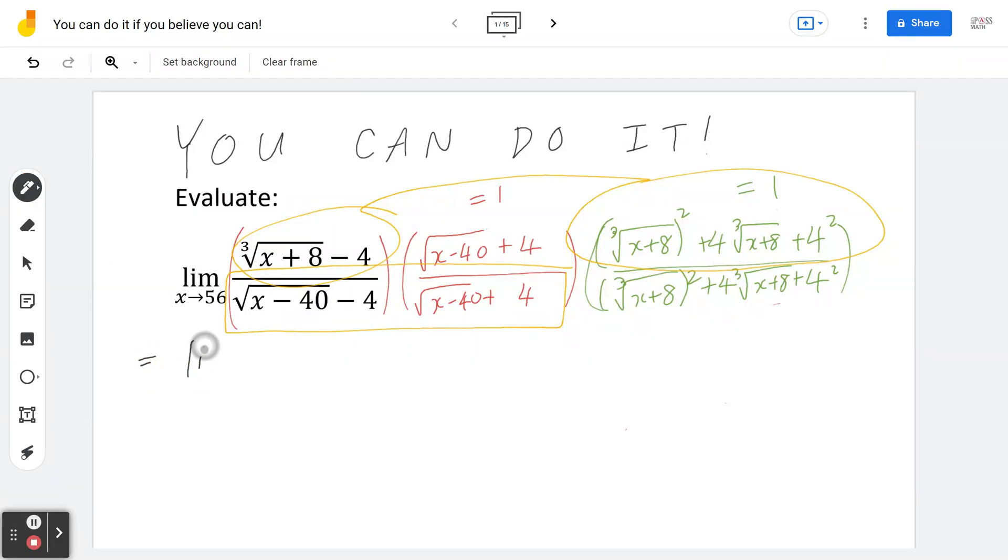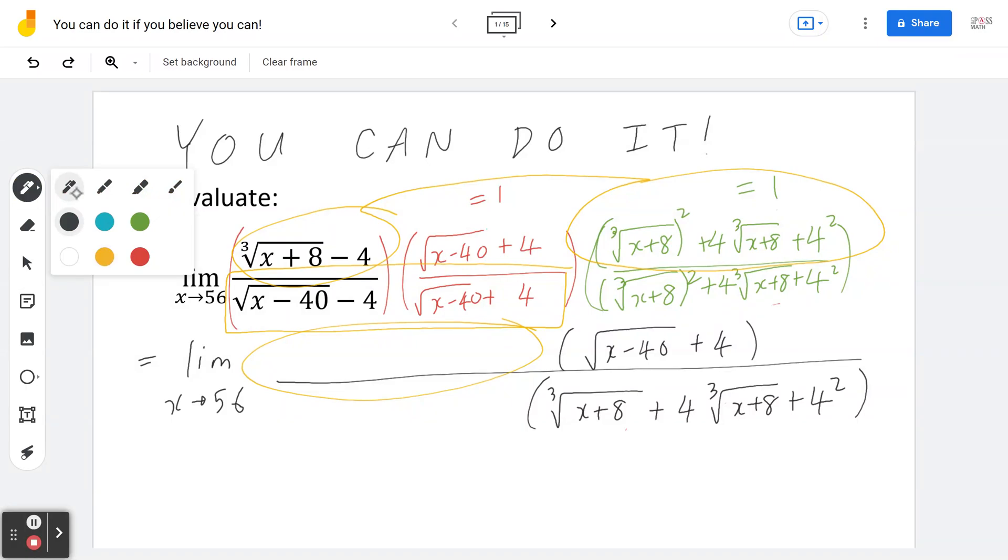So what this means is this is going to be the limit as x is approaching 56. And notice the parts I did not circle. I'm going to copy it. So I'm going to have the square root of x minus 40 plus 4 divided by, again, just copy this. There's no need to do anything else, but copy it as is. Now, if I go back to the first circle here, which is this times this, that's using the difference of cubes. So you're going to take a cubed minus b cubed. If you cube a cube root, you're going to get whatever's inside, which is x plus 8. And, of course, 4 cubed is going to be 64. Don't forget the brackets.